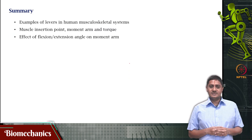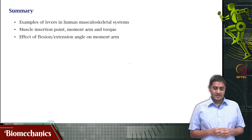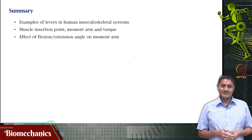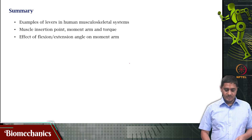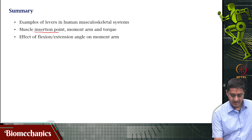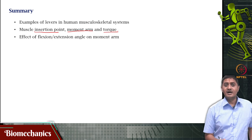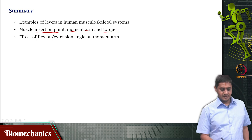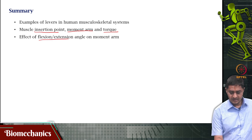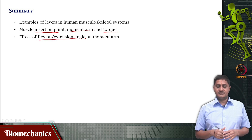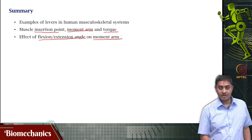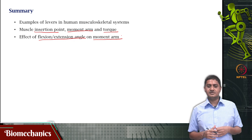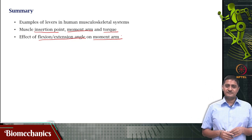With this we come to the end of this video. We saw some examples of levers in the human musculoskeletal system and how muscle insertion point, moment arm, and torque are related, and how the angle of flexion or extension — in other words, the configuration — affects moment arm and further the torque that is produced. Thank you very much for your attention.